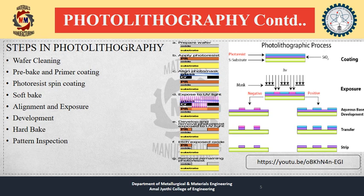A single iteration of photolithography combines several steps in consecutive sequence. Modern clean rooms use automated robotic wafer track systems to coordinate the process. The photolithography process is carried out by the wafer track and stepper or scanner installed side by side. For wafer cleaning, if organic or inorganic contaminates are present on the wafer surface, they are usually removed by wet chemical treatment.